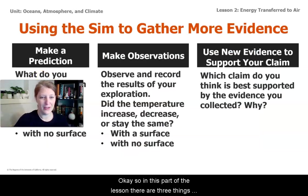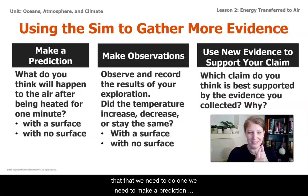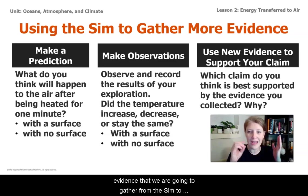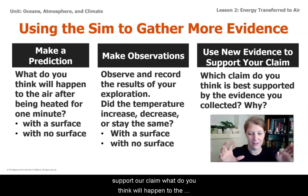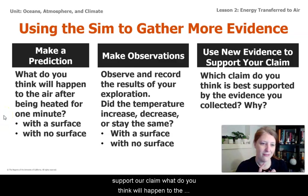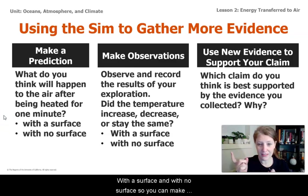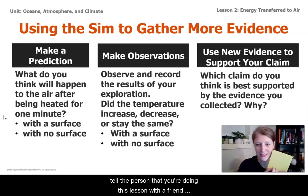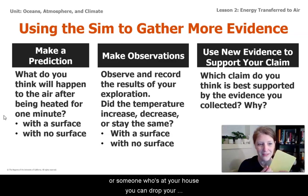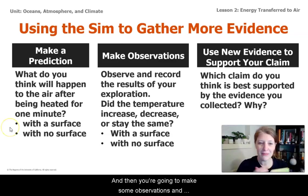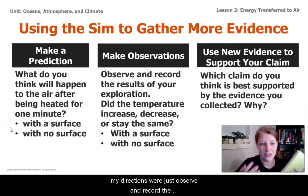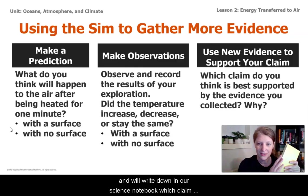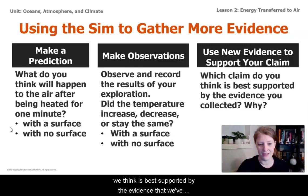In this part of the lesson, there are three things that we need to do. One, we need to make a prediction. Two, we need to make observations. And then finally, we need to use our new evidence gathered from the sim to support our claim. What do you think will happen to the air after being heated for one minute with a surface and with no surface? You can make your prediction in your notebook, tell the person you're watching with, jot your ideas down, or just say them. Then you're going to make some observations — did the temperature increase, decrease, or stay the same? And finally, we'll write down in our science notebook which claim we think is best supported by the evidence we've collected.